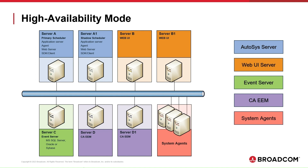The Autosys High Availability mode provides an internal failover solution. However, Autosys Servers can also be implemented in a highly available cluster environment using cluster management software such as Red Hat Cluster Suite or Microsoft Clustering solutions. This configuration provides a failover solution for the scheduler and the application server. Using this option is recommended when you need a failover solution and have cluster management software installed. If you do not have cluster management software, the High Availability mode provides an internal solution.